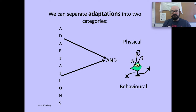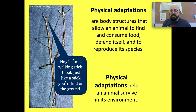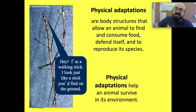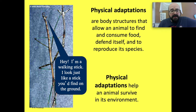We can separate adaptations into two categories: physical and behavioral. Physical adaptations are body structures that allow an animal to find and consume food, defend itself, and to reproduce its species. For those wondering what 'reproduce its species' means — it means to make copies of itself, or to have babies. That's the easiest way to describe that.